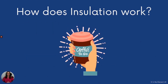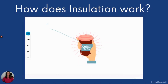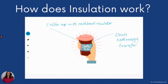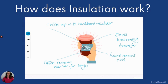If we take a look at this coffee cup, we can see how the insulation works. You've got the coffee cup with a cardboard insulator. The cardboard insulator slows the heat energy transfer down, which means our coffee will remain hotter for longer. Importantly, the hand will remain cooler so we can walk around with our coffee cup. We could go for a walk with our coffee cup — our coffee will stay warm and our hand will not get burnt.